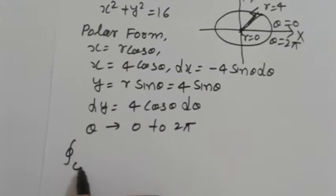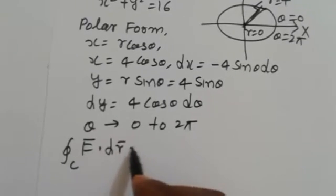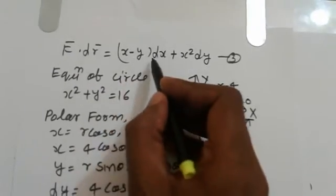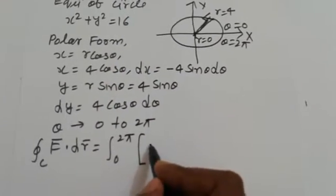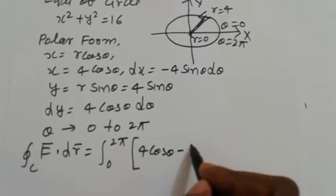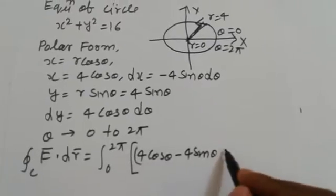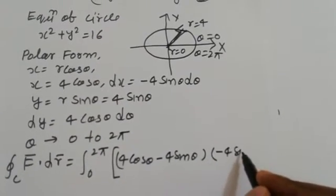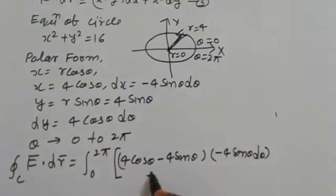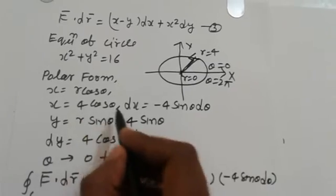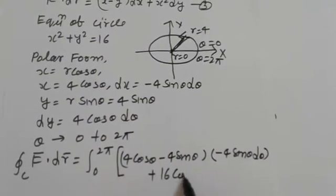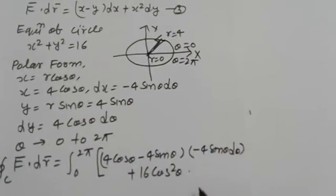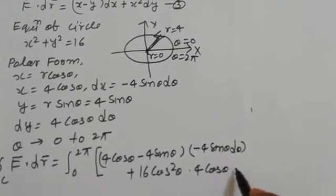The closed line integral C of F·dr equals the integral from 0 to 2π. Substituting x − y = 4 cosθ − 4 sinθ and dx = −4 sinθ dθ, plus x² = 16 cos²θ and dy = 4 cosθ dθ.